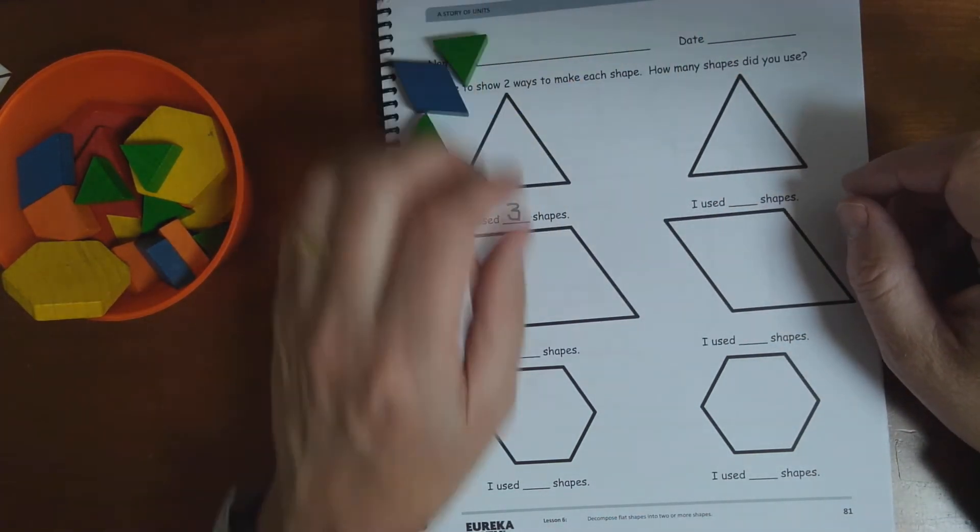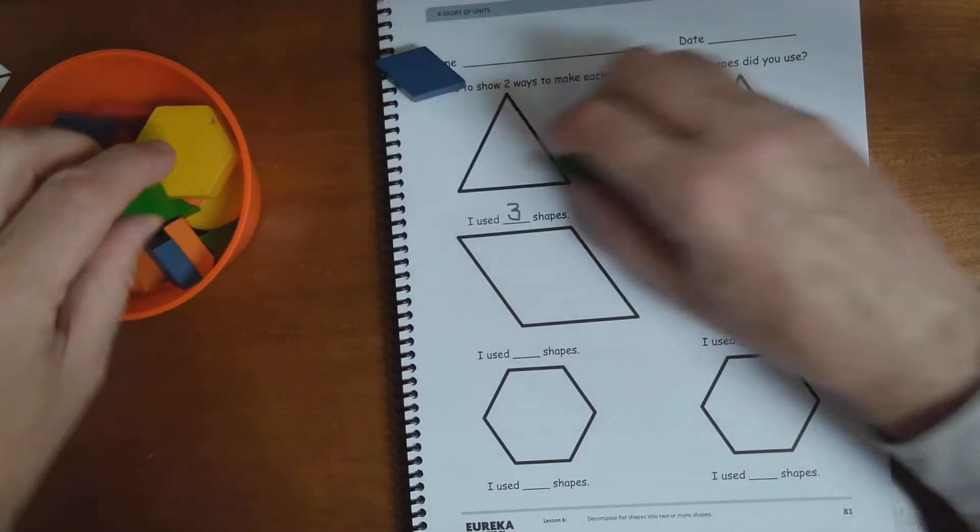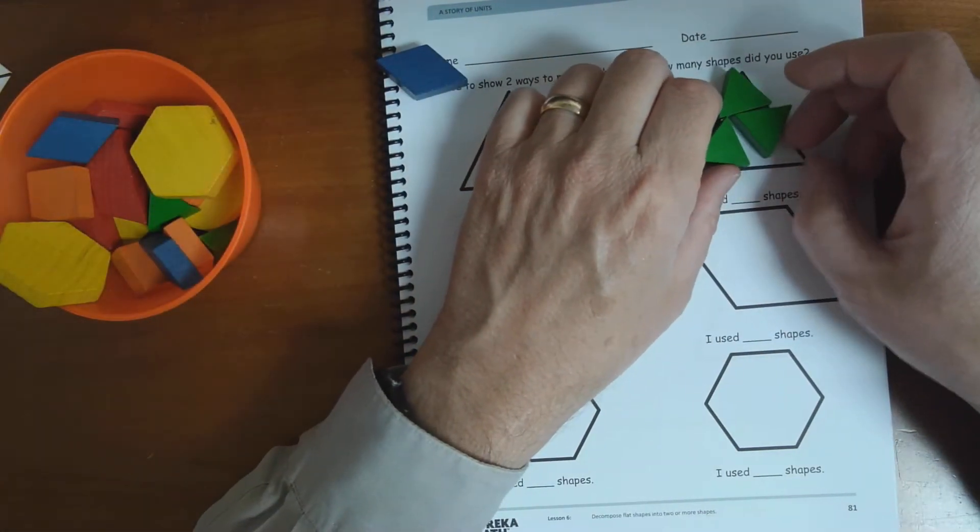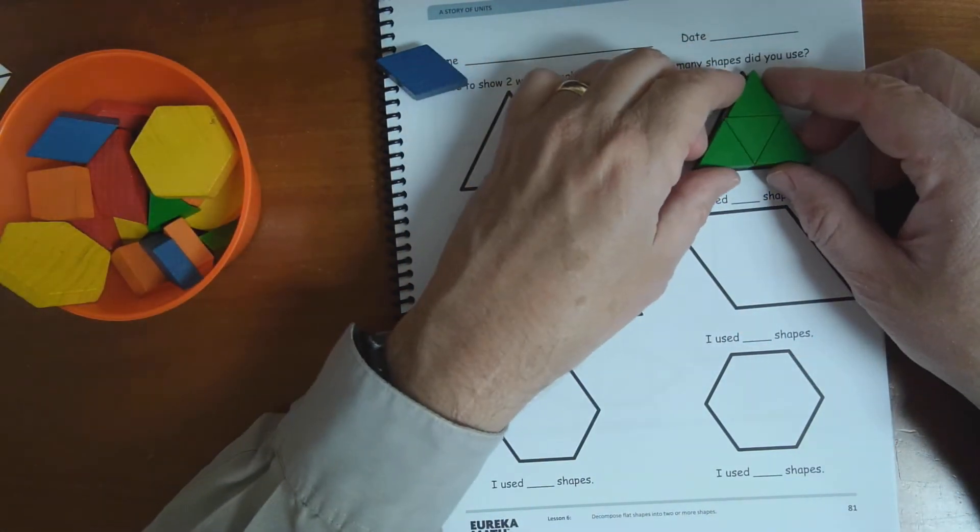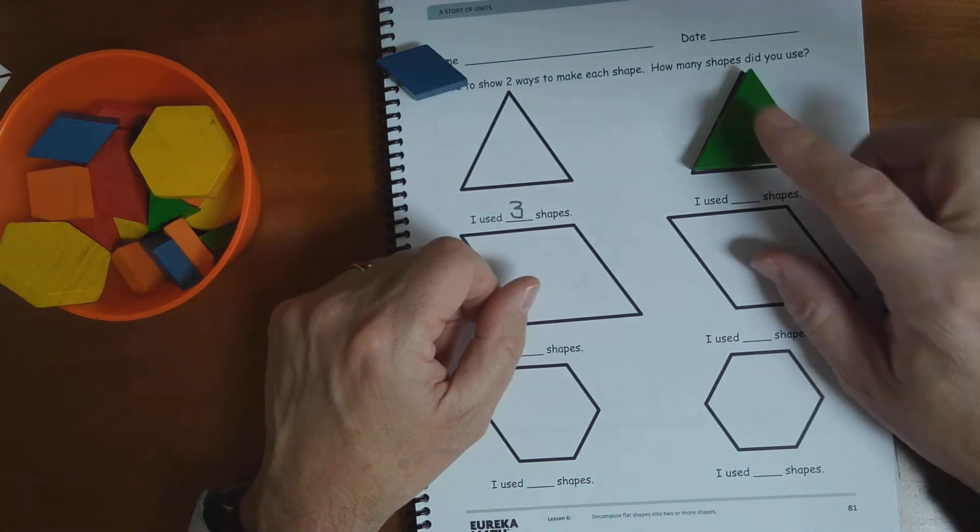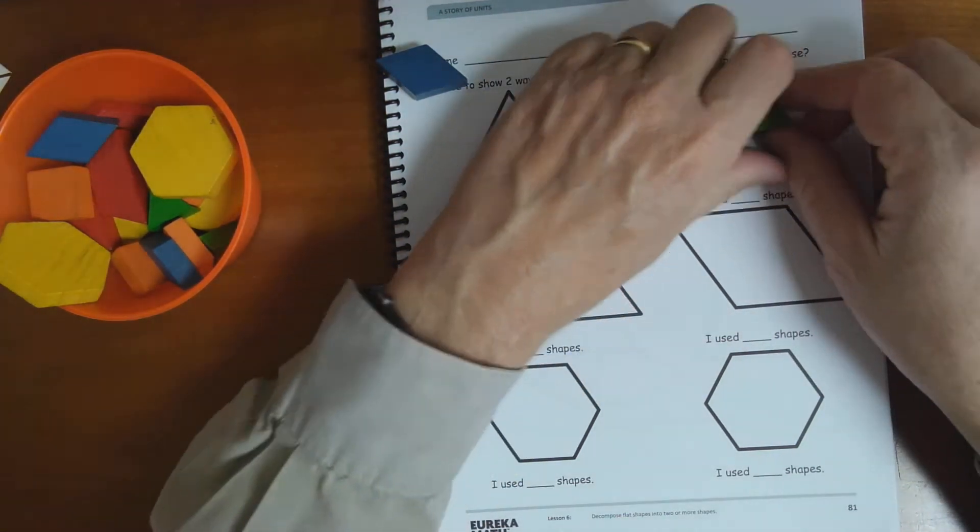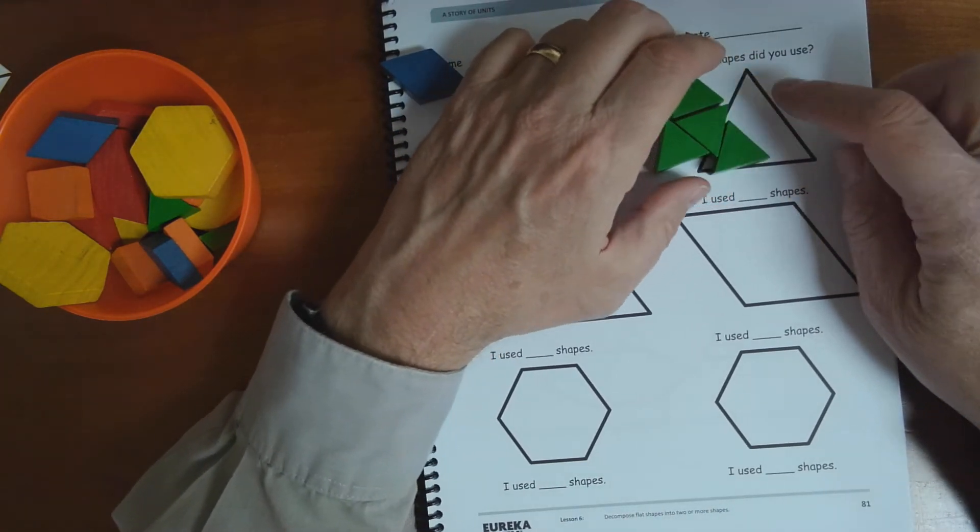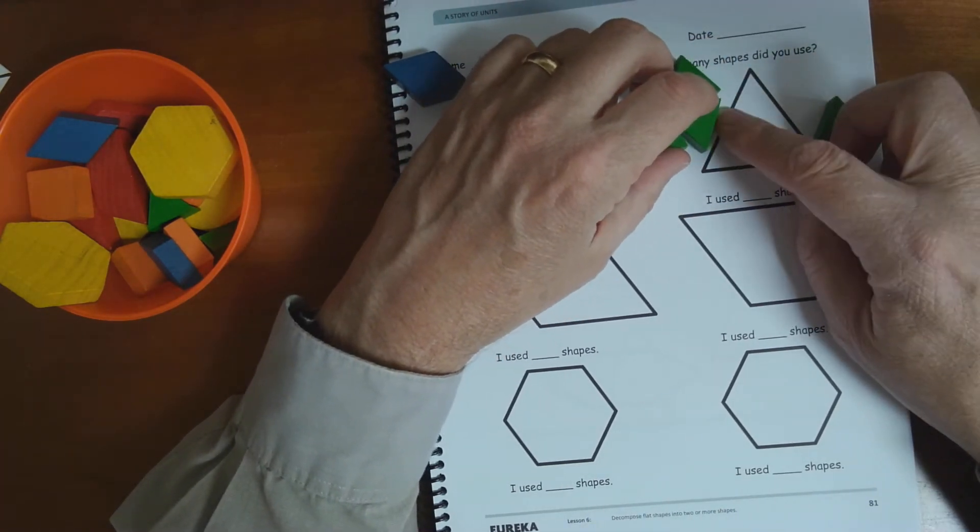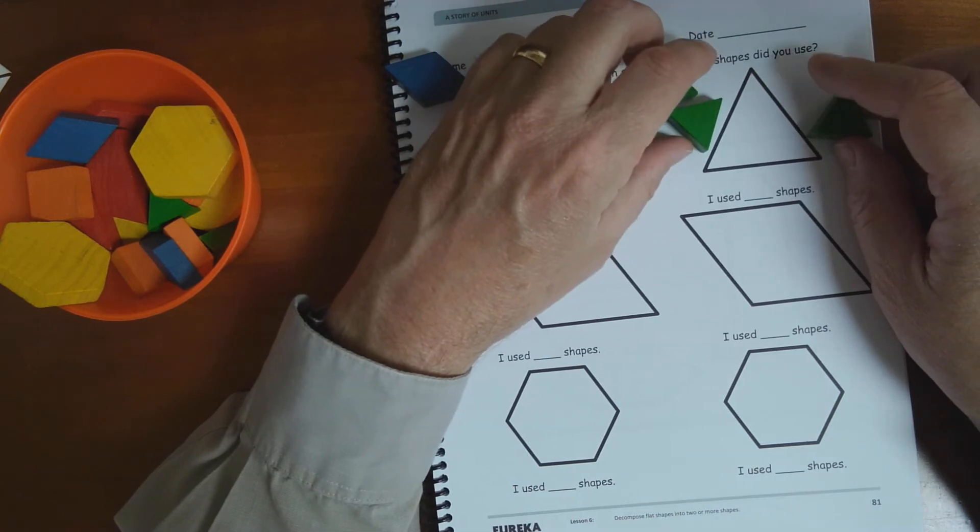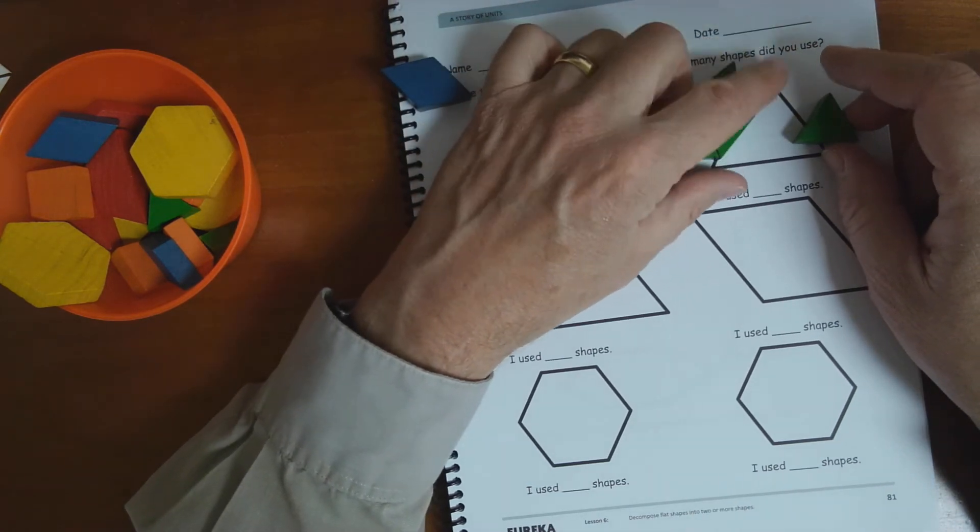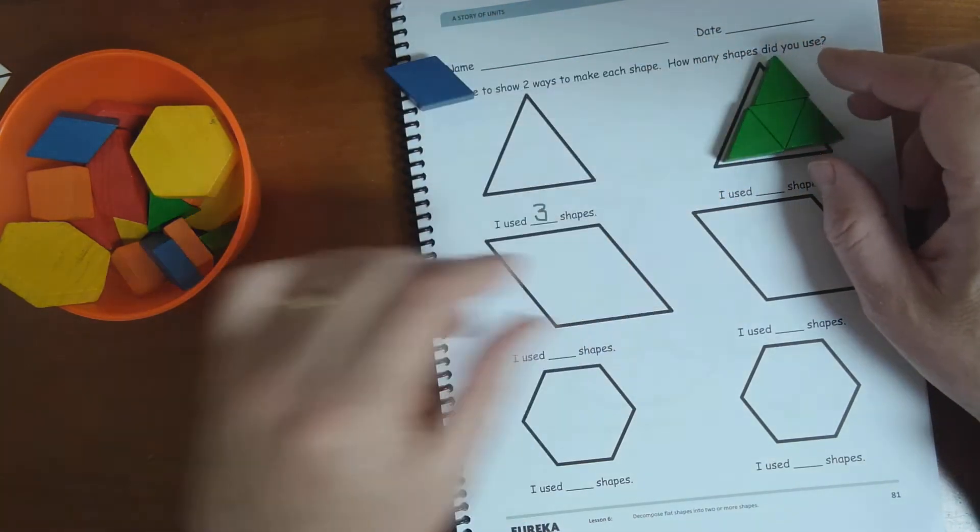Now over here we have another triangle. We could try to cover up this triangle with these smaller triangles, couldn't we? And how many do you have there? Four. So you could say four shapes and then you would draw across here and down here and down here to make four. You can pause to go ahead and do this if you want, if you need to.